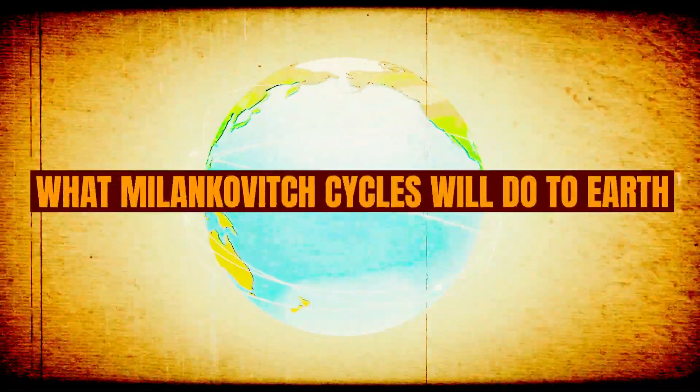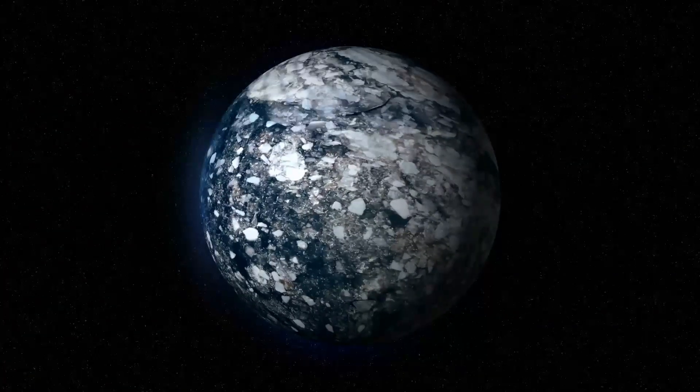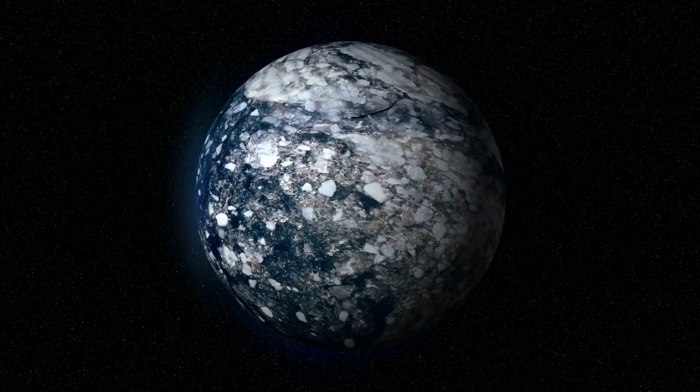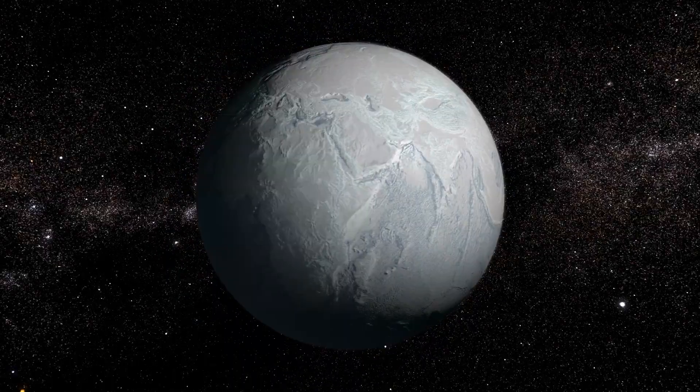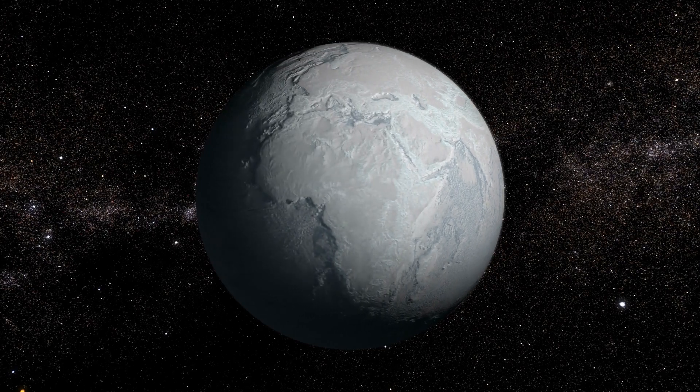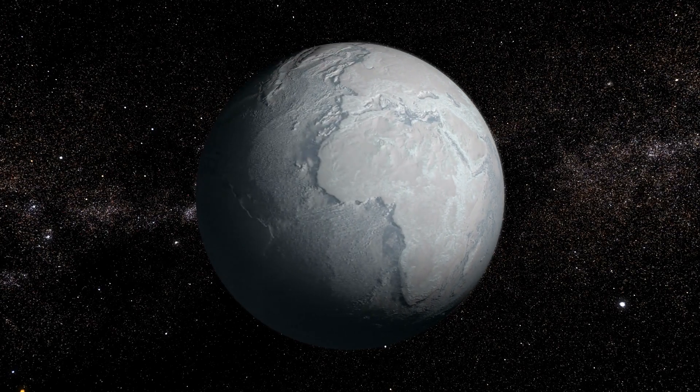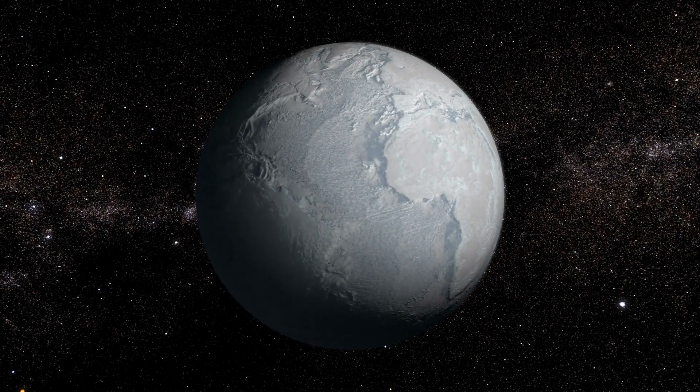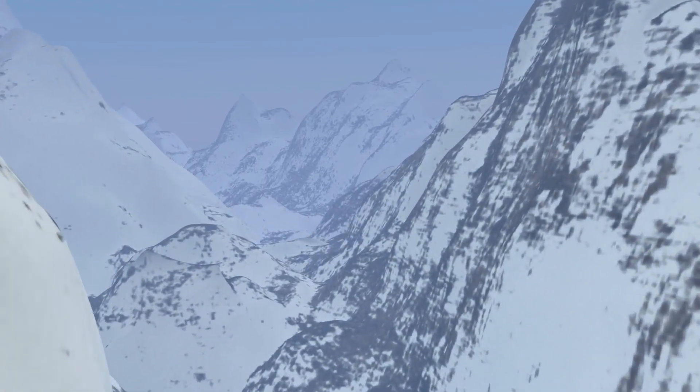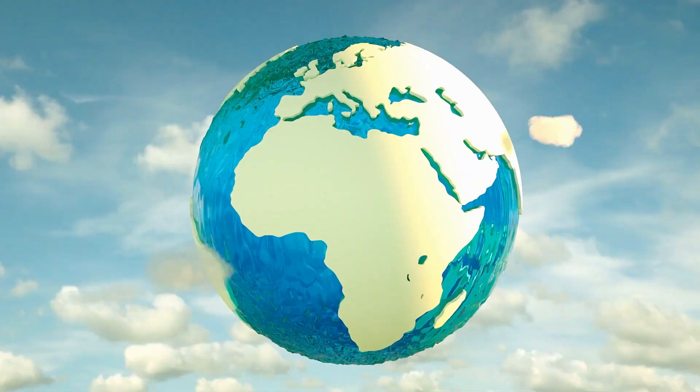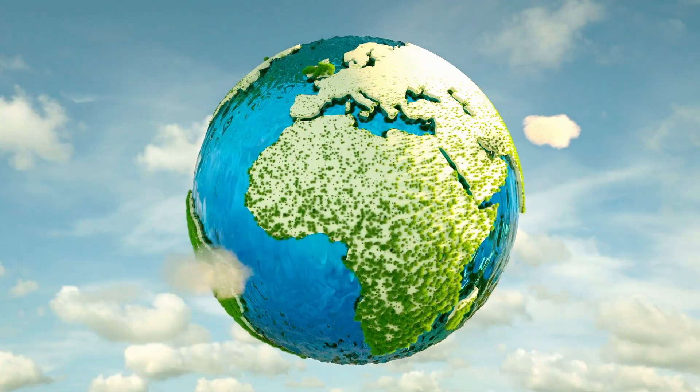Milankovitch cycles are the driving force behind ice ages, climate shifts, and habitability of planets. These are periodic changes in the orbital characteristics of a planet that control how much sunlight it receives, thus affecting its climate and habitability over hundreds of thousands of years.